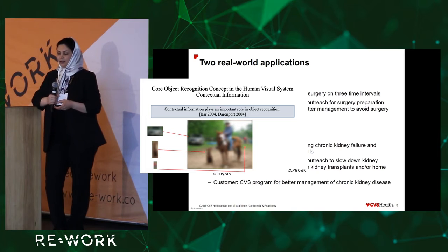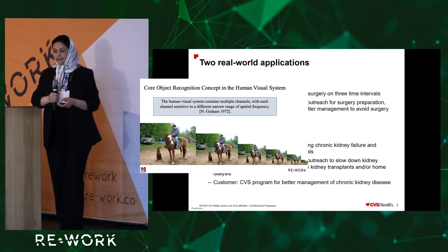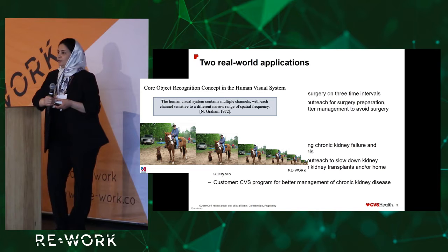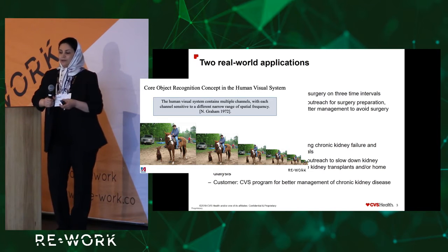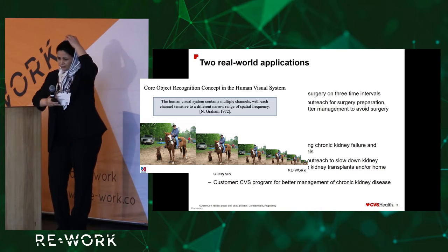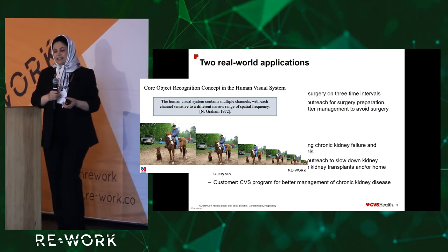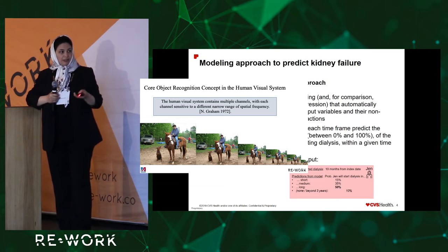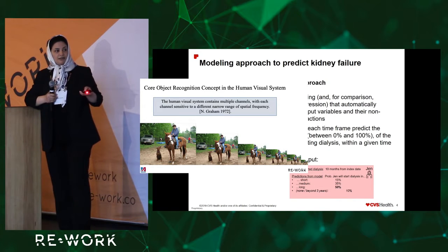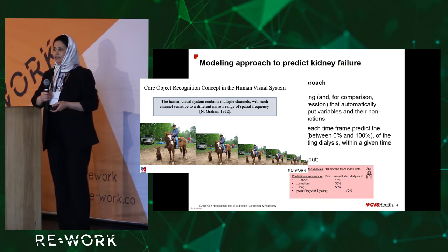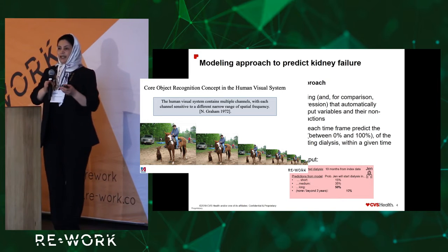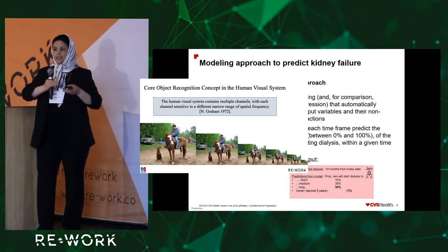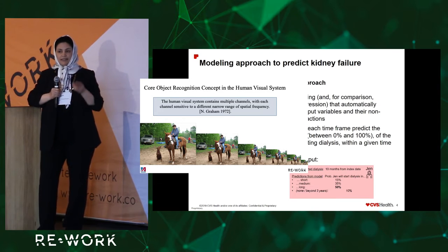The third line of evidence is that the human visual system contains multiple frequency channels, and each channel is sensitive to a different narrow range of frequencies. In the real world, we can see this as images taken at different distances. If you up-sample a distant image to the size of a closer one, we get a low-resolution image. Human eyes can actually analyze all of these images in their own specific channel.